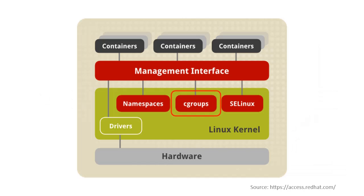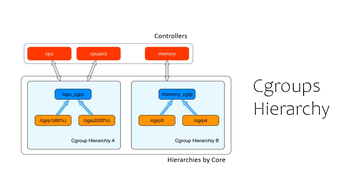Control groups is a kernel feature and was added to the kernel in version 2.6, but enhanced with KernFS in 3.15 and 3.16. It's one of the vital ingredients required for creating a container in Linux. The cgroup mechanism comprises of two parts: the cgroup core and the controllers.